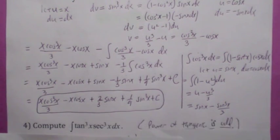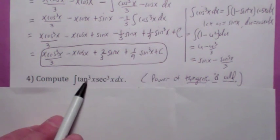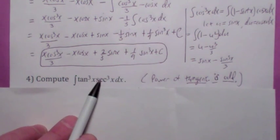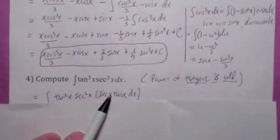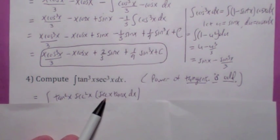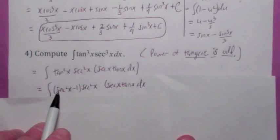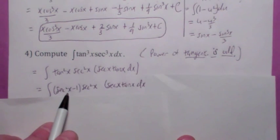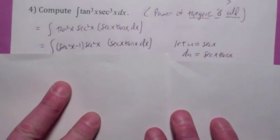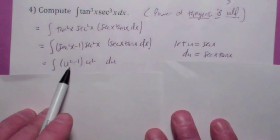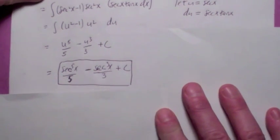Now let's talk about powers of tangent and secant. If tangent has an odd power, you pull off one tangent and one secant—that's your du. Since tangent was odd, the remaining power of tangent is even, so you can write tangent in terms of secant using the identity tan squared equals secant squared minus 1. Then u becomes secant, du becomes secant tangent, and you end up with something of the form u squared minus 1 times u squared du. When you integrate you get a polynomial in u; make sure to write back in terms of x and add plus c.